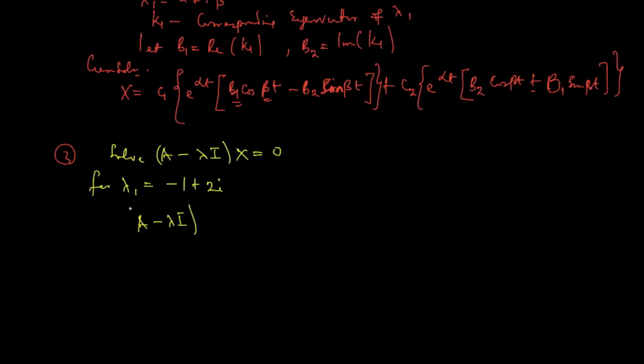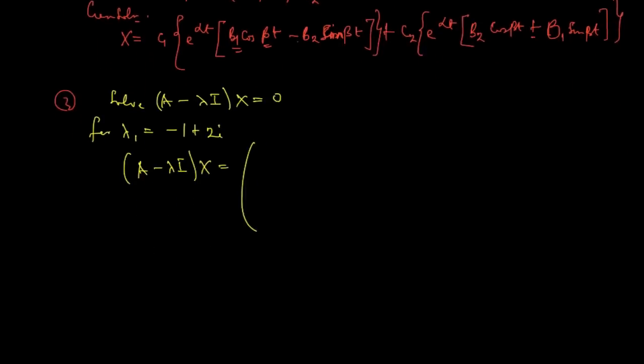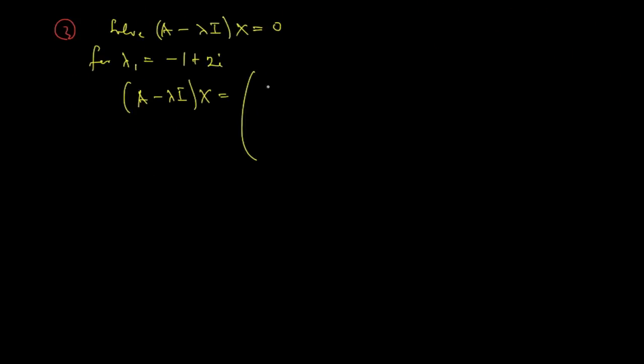So for this, our A minus lambda I times x equals, so we're going to replace lambda in this equation here, anywhere we see lambda, replace with minus 1 plus 2i. And then the matrix that we obtain, it's going to be 2 minus 2i, negative 8, then 1, then minus 2 minus 2i, times xy equals 0, 0. So this is exactly what we'll be obtained.